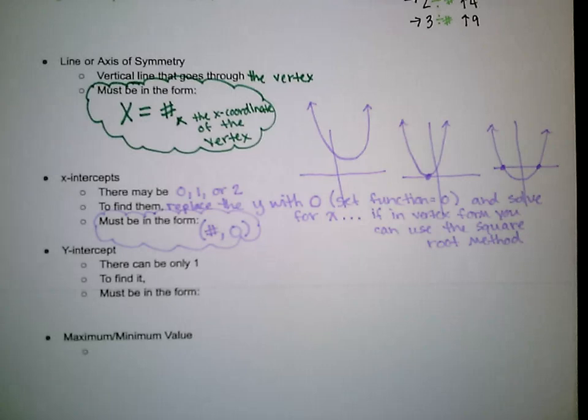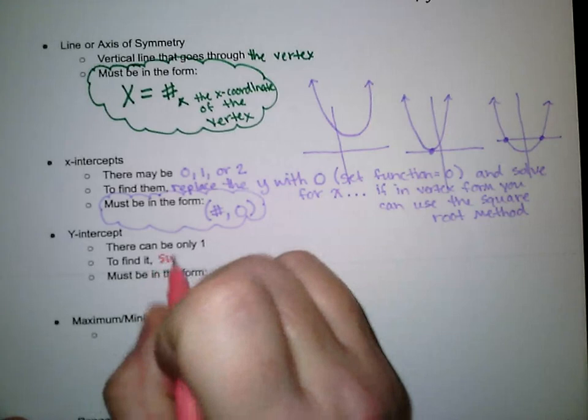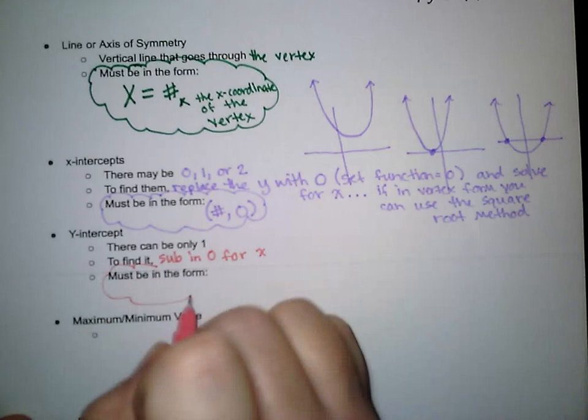For the y-intercept, there can be only one — otherwise it won't be a function. To find it, we substitute 0 for x. The result has to be in the form (0, number).